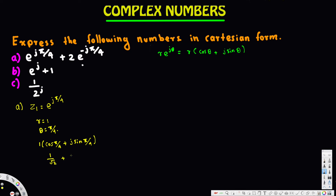Cosine(5π/4) is 1 over root 2, and sine(5π/4) is also 1 over root 2. So z1 equals 1/√2 plus j times 1/√2. This is our first result.